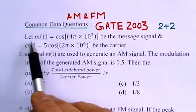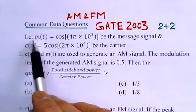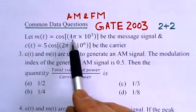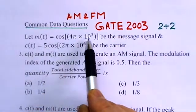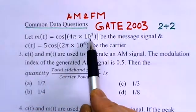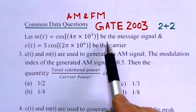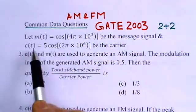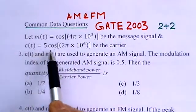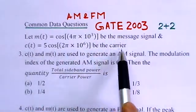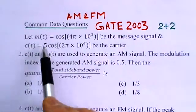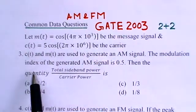The first problem: let m(t) = cos(4π × 10³t) be the message signal, and c(t) = 5cos(2π × 10⁶t) be the carrier. These are given.